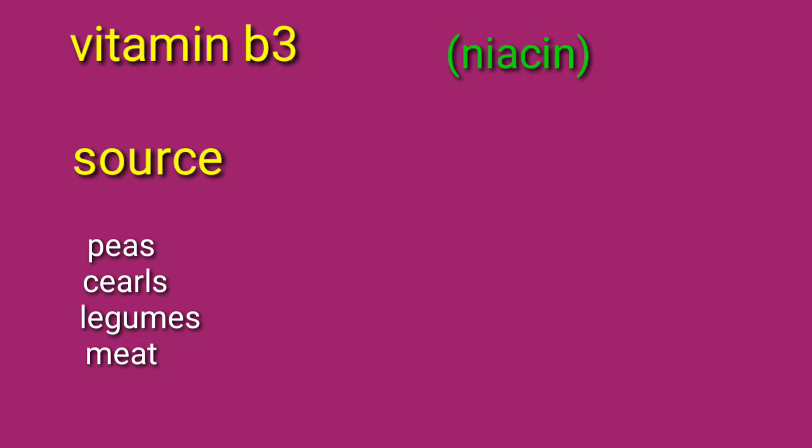Vitamin B3. Scientific name: Niacin. Source: peas, cereals, legumes, and meat. These are the main sources of Vitamin B3.